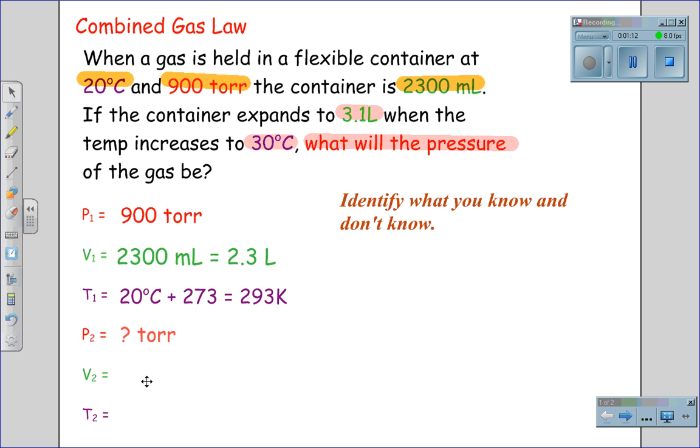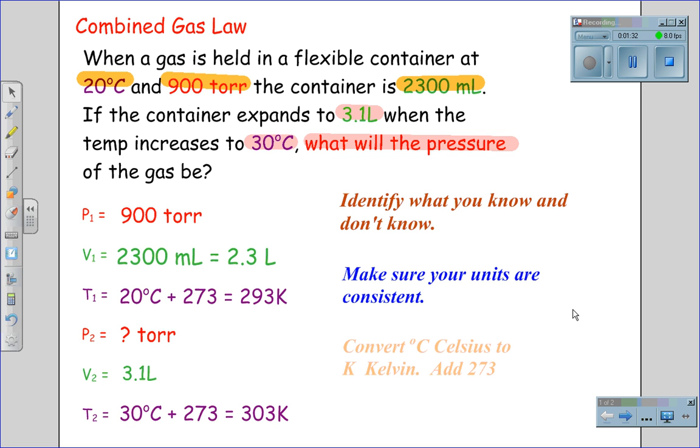We are looking for the new pressure. Our new volume is 3.1 liters, and our new temperature is 30 degrees Celsius, which again we add 273 to to get a Kelvin temperature of 303 Kelvin. When we are doing gas laws, we have to make sure all our units are consistent, and we have to convert Celsius to Kelvin by adding 273.